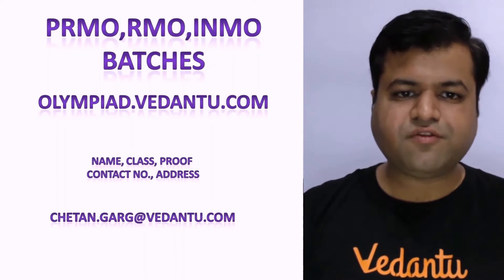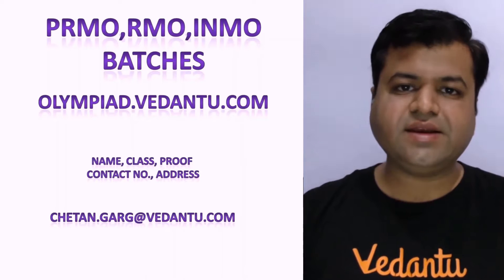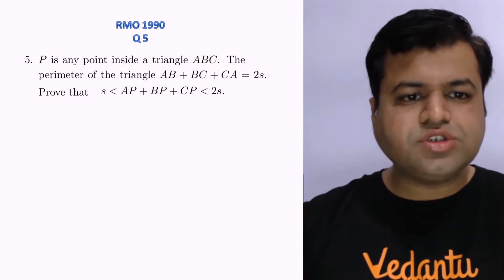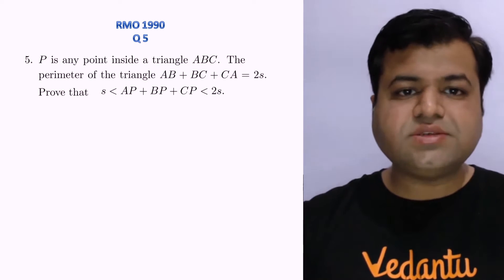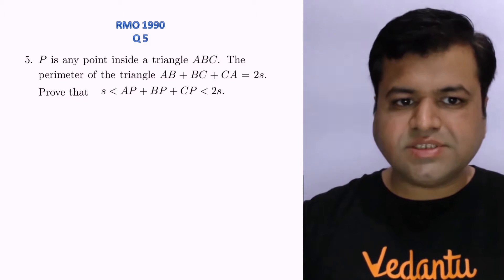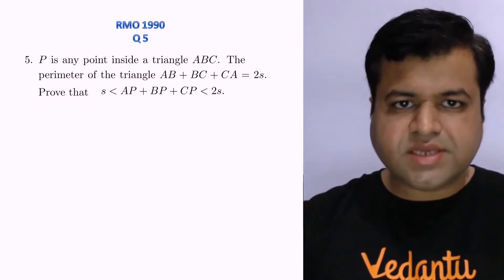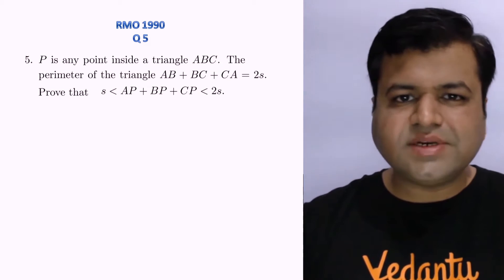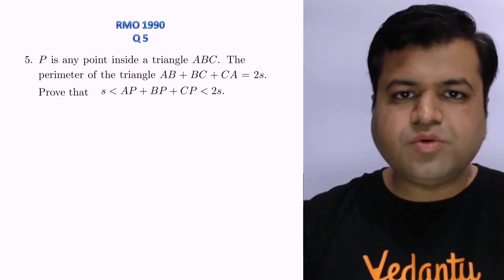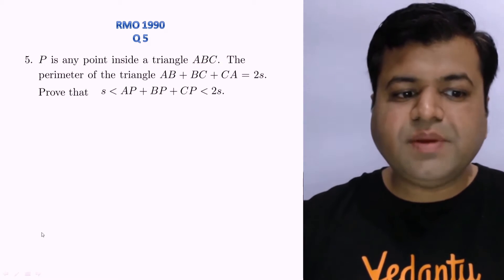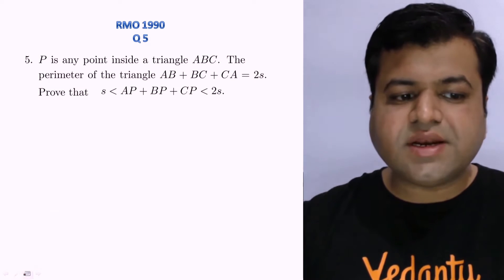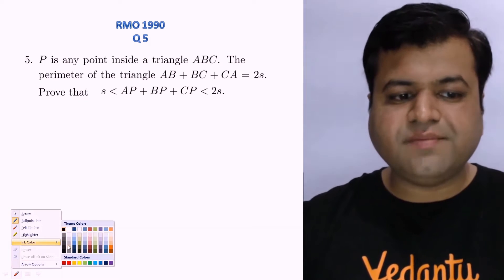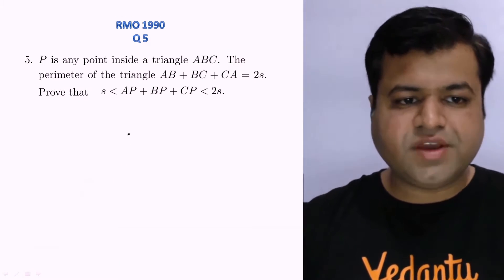Today we will be discussing question number 5 and question number 6 of year 1990. Question number 5 of RMO 1990 is basically a question of geometrical inequality. The question says P is any point inside triangle ABC. The perimeter of the triangle is AB + BC + CA, which equals 2S, where S is the semi-perimeter. We need to prove two results: first, AP + BP + CP is greater than S; and second, AP + BP + CP is less than 2S.